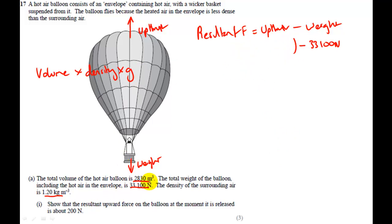I'm going to put it in brackets. So it's going to be the volume of the balloon will be the volume of the air that's been displaced. They'll be equal to each other. So that's 2 8 3 0 meters cubed, multiplied by the density of the air, 1.2, multiplied by g, acceleration due to gravity, 9.81. And if I do this calculation,